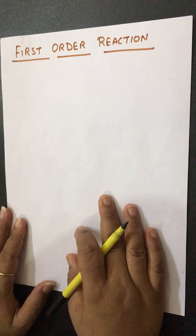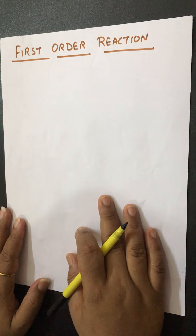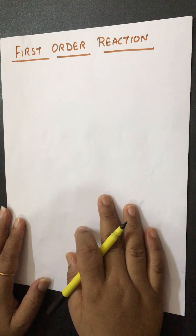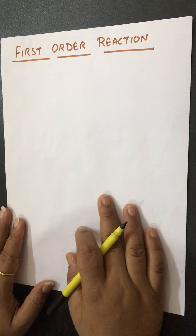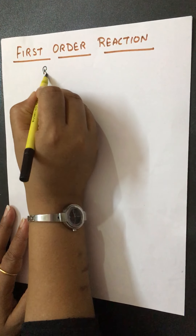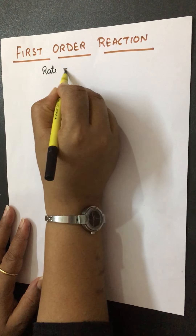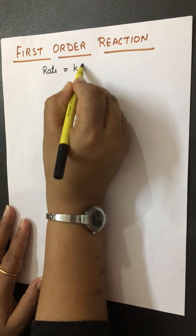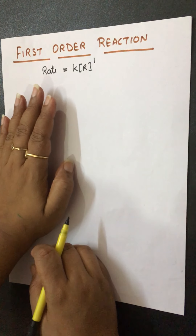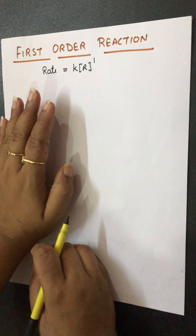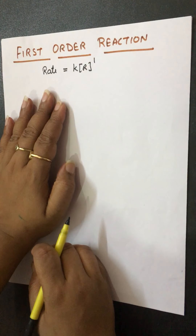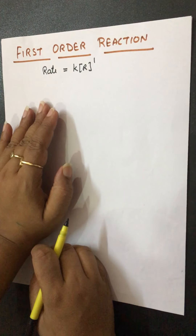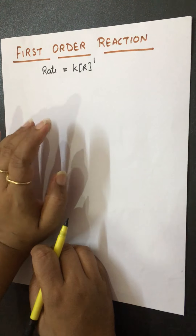Today we will discuss first order reactions in chemical kinetics. In the last video we covered zero order reactions, and now we start the same manner with first order reactions. First order reactions are those in which the rate of reaction depends upon the first power of concentration of reactant. We can say rate equals to k·R to the power of 1.